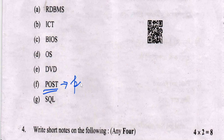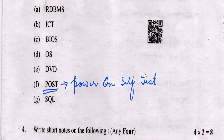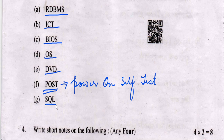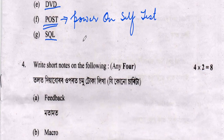Power On Self Test — POST. The full forms for Part 5 are: RDBMS — Relational Database Management System; ICT — Information and Communication Technology; BIOS — Basic Input Output System; OS — Operating System; DVD — Digital Versatile Disk; SQL — Structured Query Language. The full forms are done.